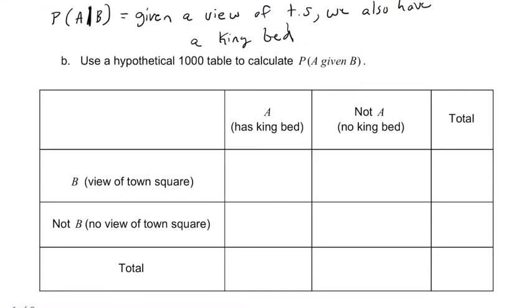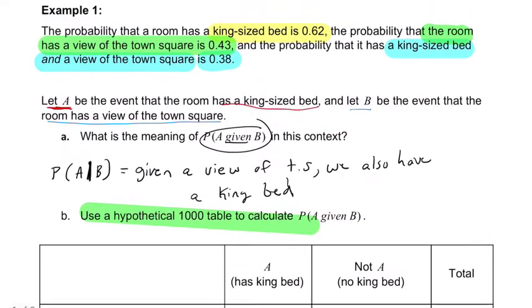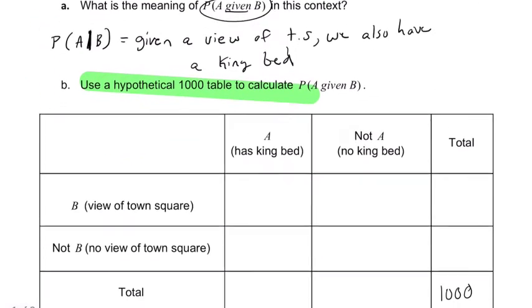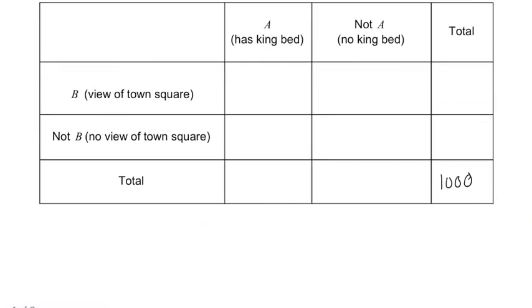And here they're asking us to use the hypothetical 1,000 table. That just means we're dealing with hypothetically 1,000 people. What would we expect to find? If we go back, the probability of getting a king size bed is 0.62. So 620 goes here. It's all the ways, all the people that have king beds.